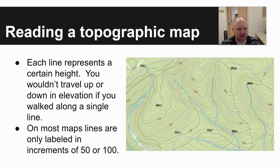On maps, lines are only labeled in increments of 50 or 100 for the most part. Looking at the bottom left of the map, you see a line that says 600, and then a line, another line, a third line, a fourth line, and then it says 650. So each bold line represents a 50-foot increment, and then each unlabeled line represents a 10-foot increment.